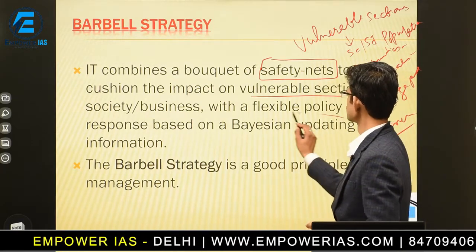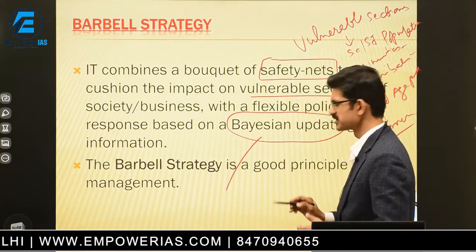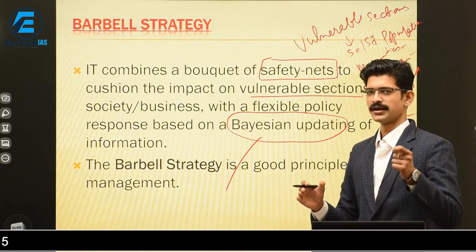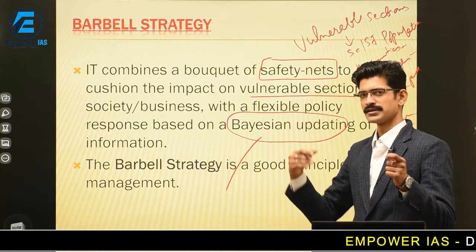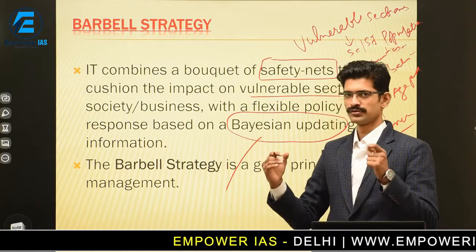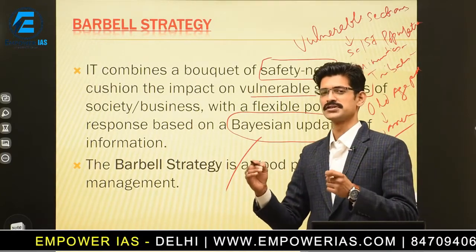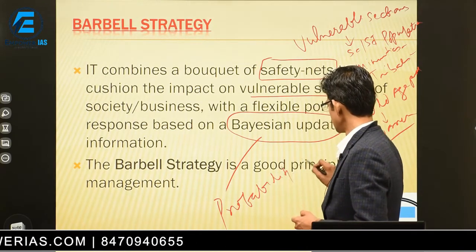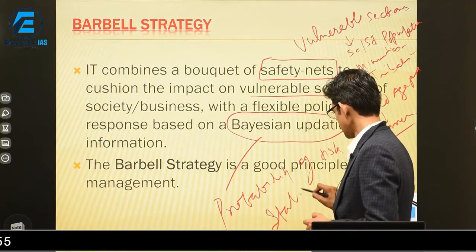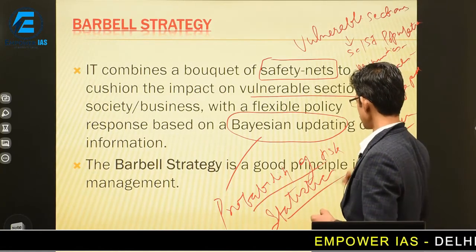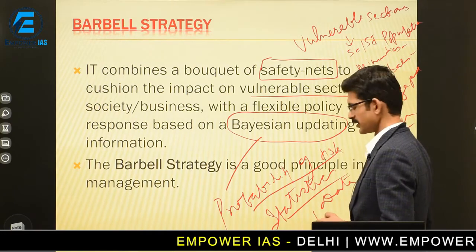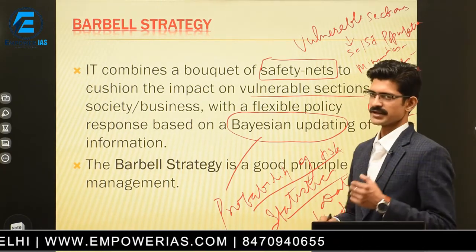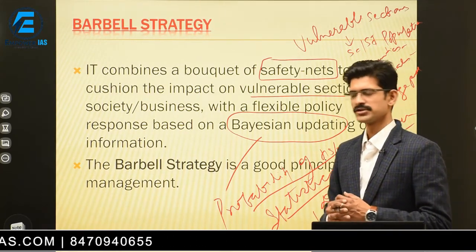That is called the Bayesian updation model. What is the Bayesian updation model? The risk rate of the economy is the probability calculated through statistics and data available to the government. There is forecasting of schemes and policies for the benefit of vulnerable sections as well as industries lagging in the economy. So by calculating the probability of risk through statistics or data, funds are provided in order to mitigate the challenges of vulnerable sections as well as MSMEs — micro, small and medium enterprises — which were facing the challenges.